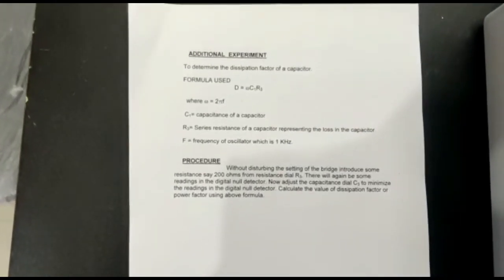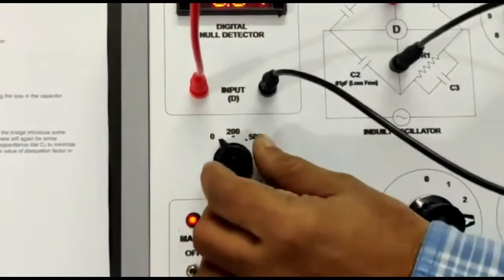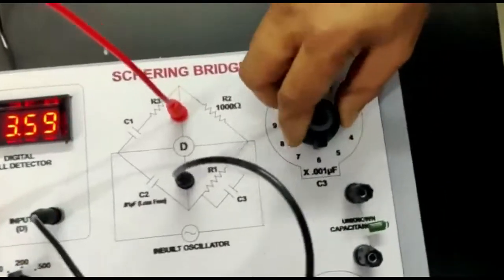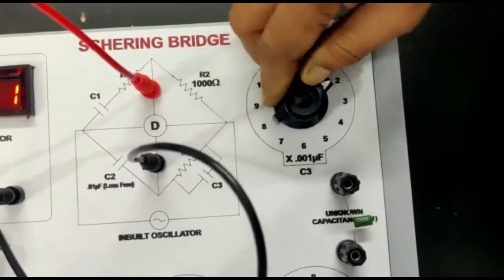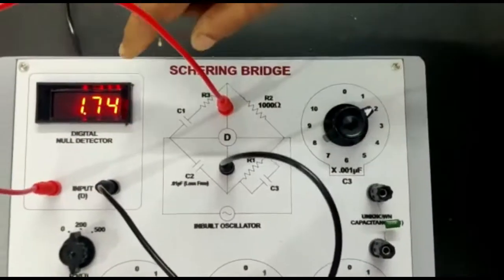Now there is an additional experiment to find the dissipation factor. Put R3 at 200 and try to find the balance by using this dial to adjust and find the minimum balance.